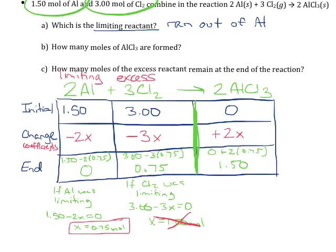The next question asks us how many moles of aluminum chloride are formed? Well, we've already answered that question. We figured out at the end how much of the product we have, and at the end we have 1.50 moles. And the last question is, how many moles of the excess reactant remain at the end of the reaction? So important things here, end and excess. So since they're asking us about the excess, they're asking us about the chlorine. Since they're asking us about the end, we want to figure out how much chlorine we have left at the end. And again, we see from our math that we have 0.75 moles of chlorine left at the end.